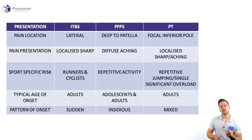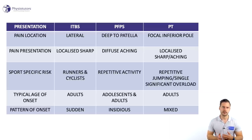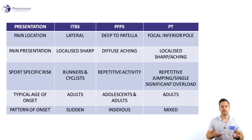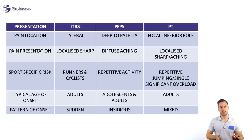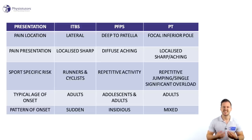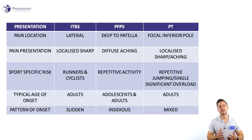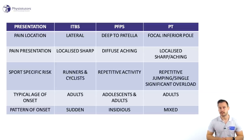Lastly, the pattern of onset can give you clues in differentiating between the three. While all three are overuse injuries and commonly result from a rapid increase in training load, the onset of symptoms in ITBS is usually sudden, whereas PFPS has an insidious onset developing over several weeks and increasing in severity.